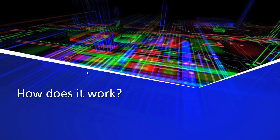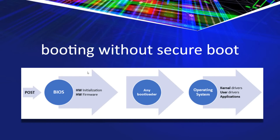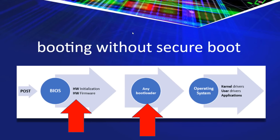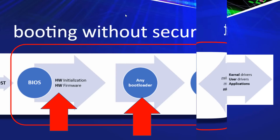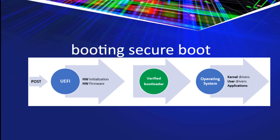So how does it work? Let's take a look at booting a PC without Secure Boot. We start with firmware initialization — we don't know for sure that the firmware has not been compromised. The firmware does its thing and then looks for a bootloader and loads it. Again, we don't know if that's been compromised. And then finally the operating system. All of this is untested and unvalidated in the normal booting process without Secure Boot.